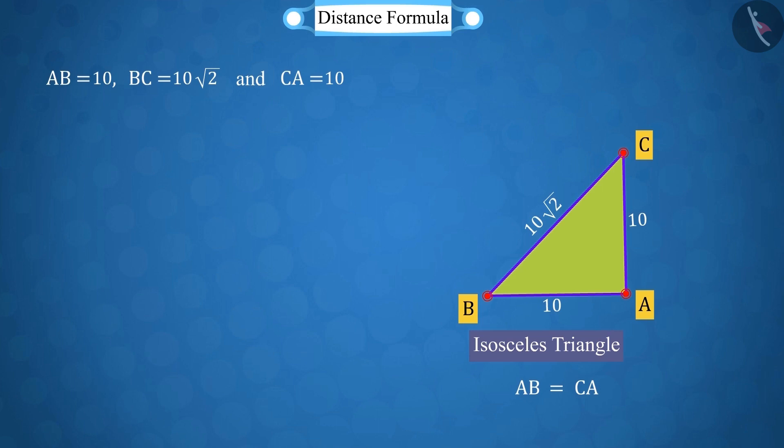From the measure of these three sides, we observe that the hypotenuse of this triangle will be BC, because the length of BC is the largest.